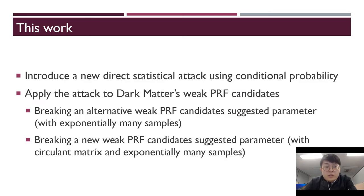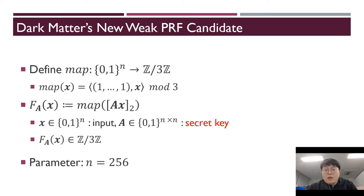This work introduces a new direct statistical attack using conditional probability. We apply the attack to dark matter's weak PRF candidates, breaking an alternative weak PRF candidate with suggested parameters using exponentially many samples, and also breaking a new weak PRF candidate with circulant matrices using exponentially many samples.